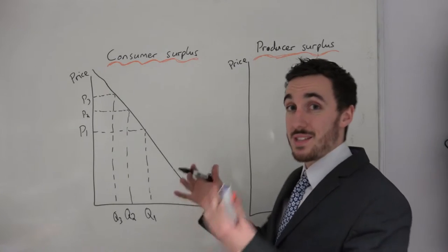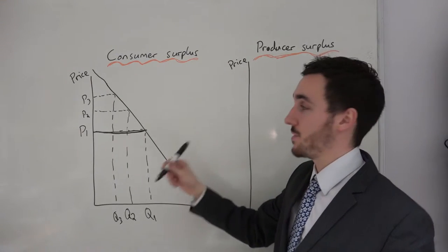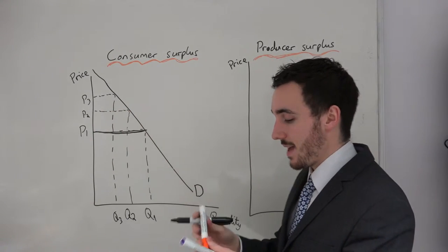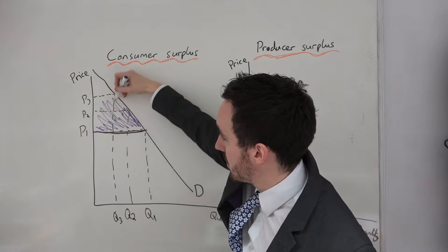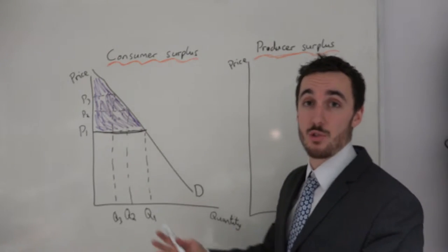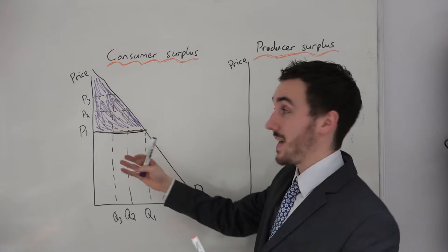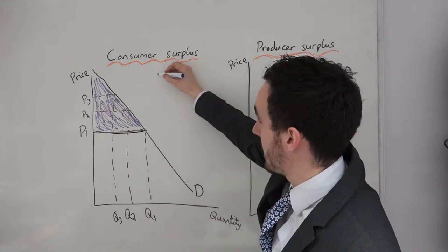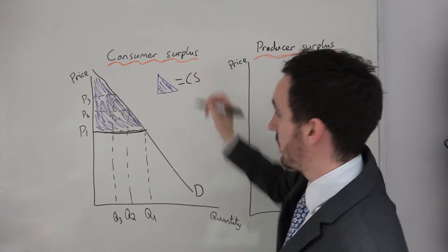There weren't many consumers willing to pay that higher price, but there were some. So if the market price is set at P1, then consumer surplus — the difference between the price in the market and the price consumers are willing to pay — means that anything above the price level in the market is consumer surplus. Surplus literally means extra, and we can show it as a triangle — the purple triangle — which is consumer surplus.